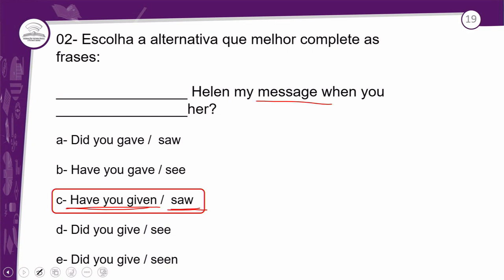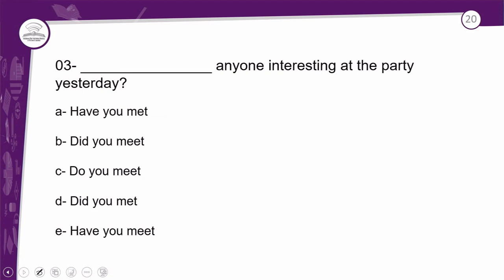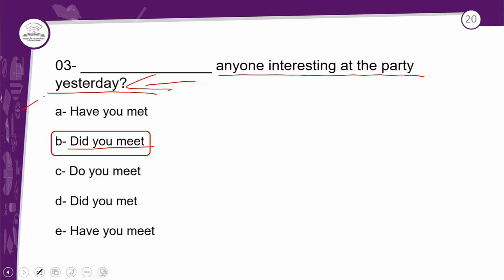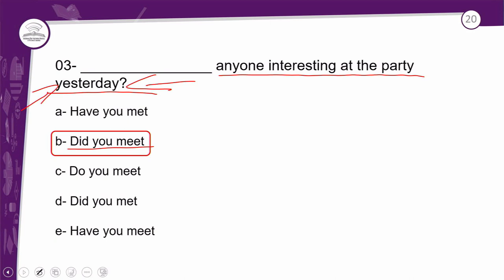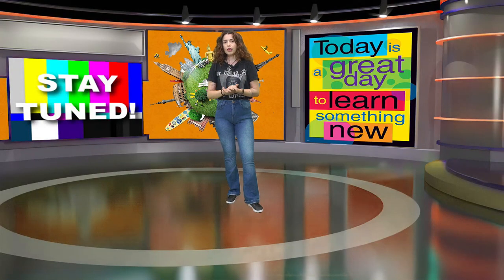Exercício 3 para finalizar: 'Did you meet anyone interesting at the party yesterday?' Com certeza é a letra B, passado simples. Por quê? 'Yesterday' — ontem. Ontem você só vai usar a estrutura de passado simples. Não tem nem como ser present perfect porque tem o 'yesterday' dizendo que acabou. 'Did you meet anyone interesting at the party yesterday?' — Você conheceu alguém interessante na festa ontem? And that's it. See you next class. Bye-bye.